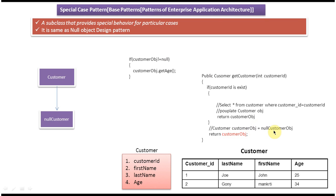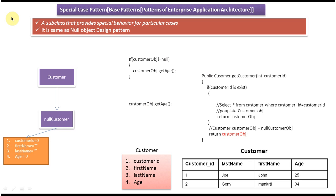The caller no longer needs to do a null check — they can simply call object dot getAge. If it is a real customer object, it returns the original values. If it is a NullCustomer object, all values will be defaults: customer ID is 0, first name is empty, last name is empty, age is 0. So if the customer is Goni, getAge returns 25; if it is a NullCustomer, getAge returns 0. This way we avoid null checks in many places.